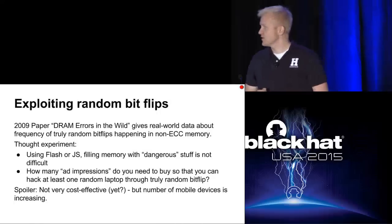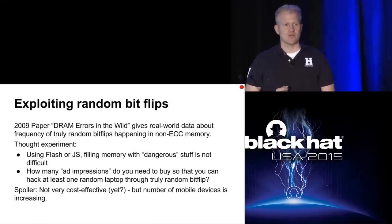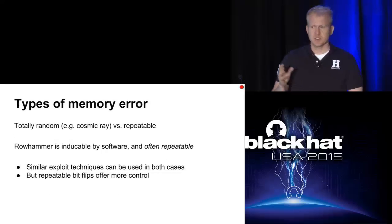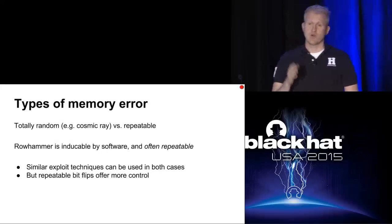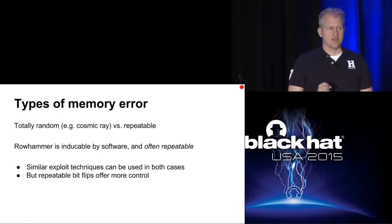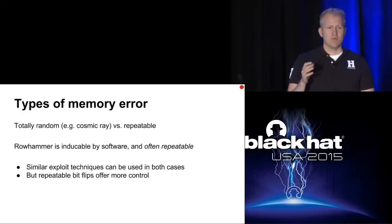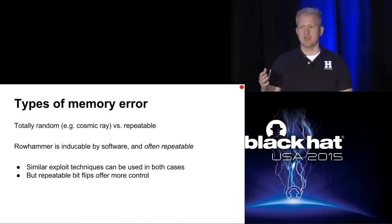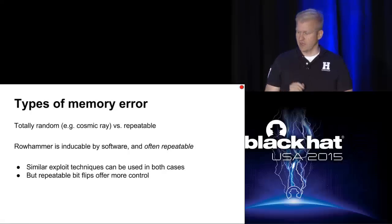It turns out that's not quite cost effective yet - but it was an interesting thing to look into. The sort of memory error we're dealing with here, Rowhammer, is very different from the truly random model. What makes the attack really reliable is that we're not randomly flipping bits - we're flipping one bit deterministically. We can't choose the bit, and its assignment is fairly random. But once we see that bit flip, we can make it flip repeatedly, and it is that repeatability that makes the exploit so reliable.